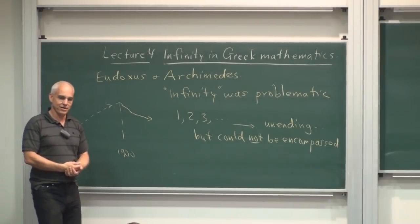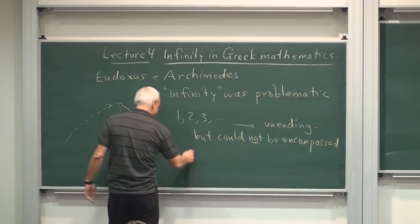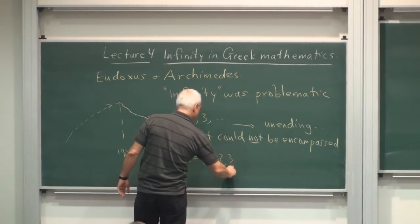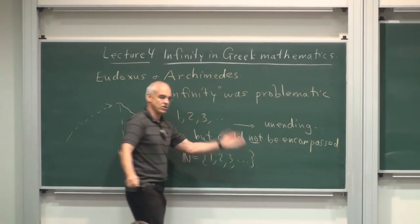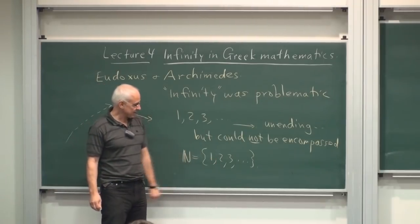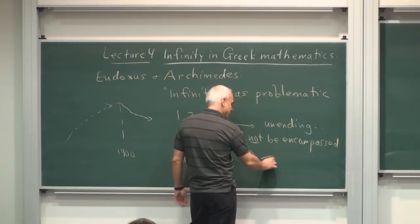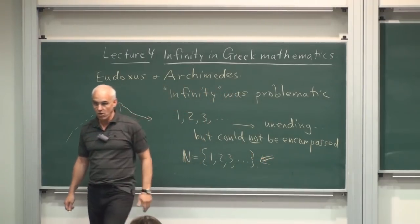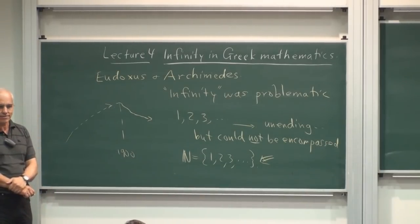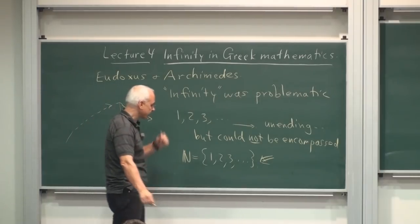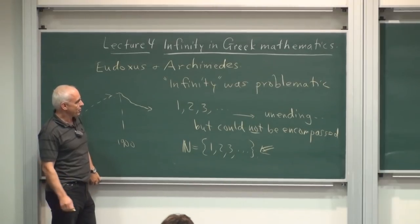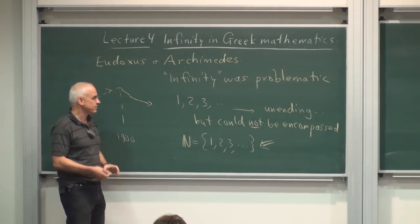These days we don't have such scruples. We wave our hands and write things like N equals the set 1, 2, 3 dot dot dot, and expect that this dot dot dot somehow encompasses all those numbers. But for most classical mathematicians, not just Greek mathematicians, but also Euler, Newton, Gauss, all the great mathematicians, they would have looked at this with deep suspicion.